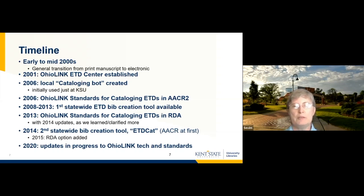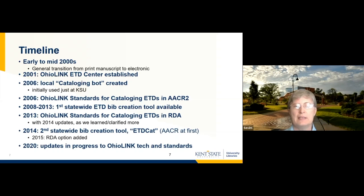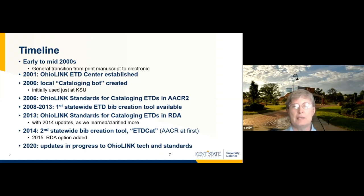OhioLINK formed a working group to develop consortial standards for cataloging ETDs. Our group was primarily to serve the needs of Ohio institutions, but we did so with an eye to create standards that could be widely applicable and compatible with national and international standards. We repeated that general process for RDA in the 2013-2014 timeframe. On the tech side, in 2016, a KSU systems librarian, Mike Krejci, now retired, experimented and created what he called a software cataloging agent — a cataloging bot. This was first used locally and then adapted for statewide use in 2008, creating AACR2 BIB records for ETDs.